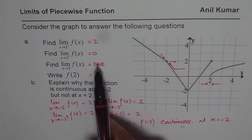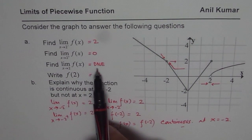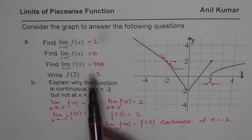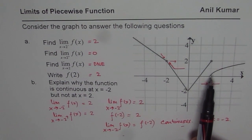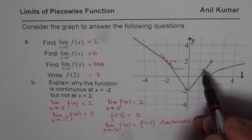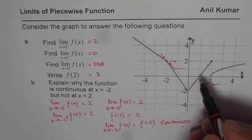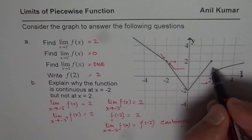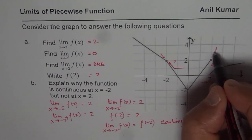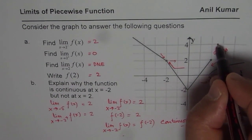On the other hand, the limit of the function does not exist at x equals 2, therefore it is discontinuous. The left and right limits are different, and this kind of discontinuity is called jump discontinuity.